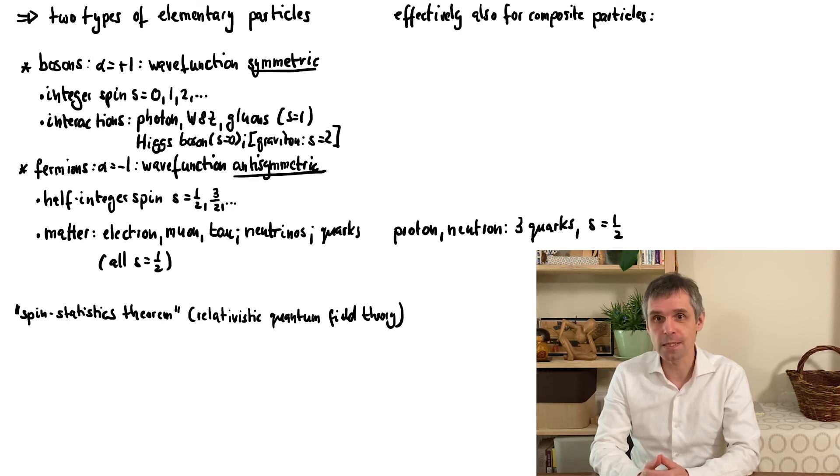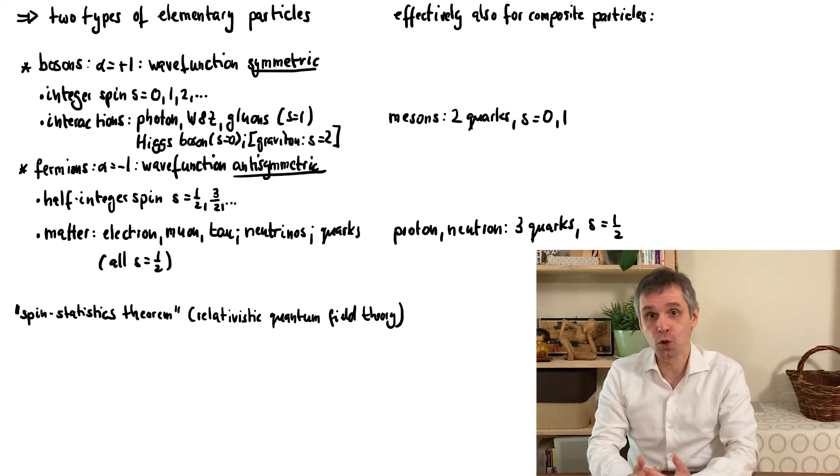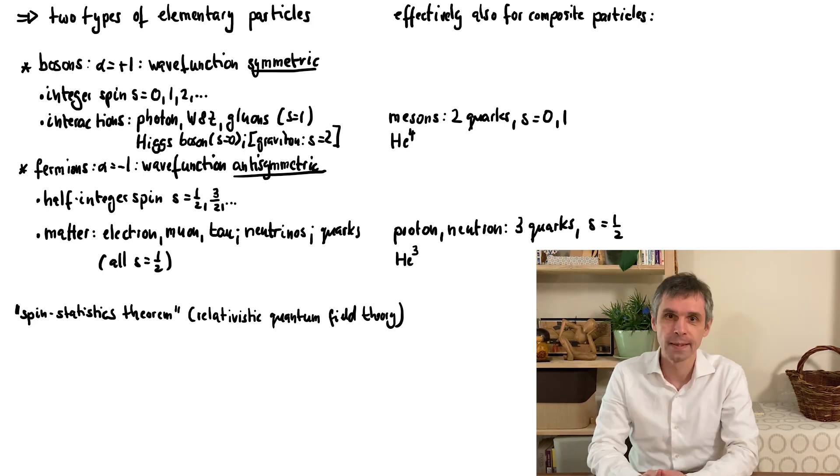An example for this would be a meson, which is a particle composed out of two quarks. We can further extend this to more complicated objects, such as atoms, with helium-3 being an example for a fermion and helium-4 being an example for a boson. These both contain two electrons, but either three or four nucleons, so protons or neutrons, and any such system can be classified analogously. And we will return to atoms very soon, but from a slightly different perspective.